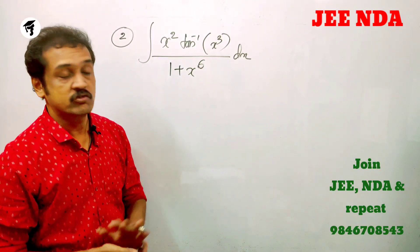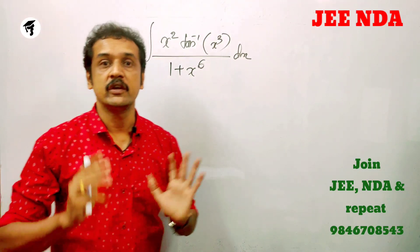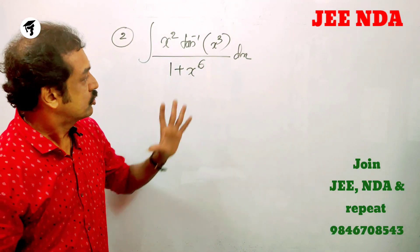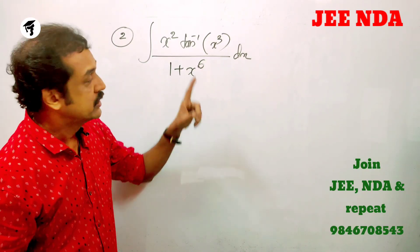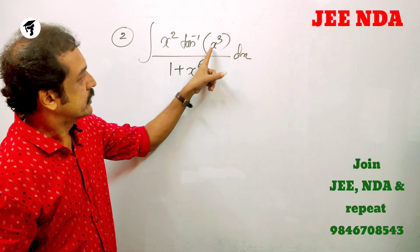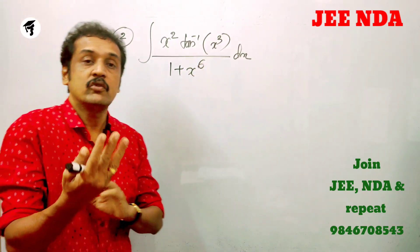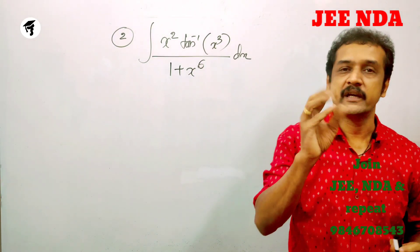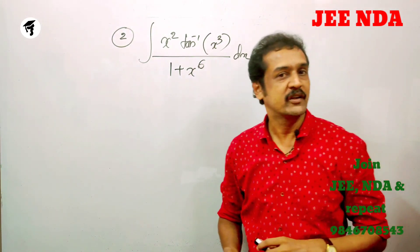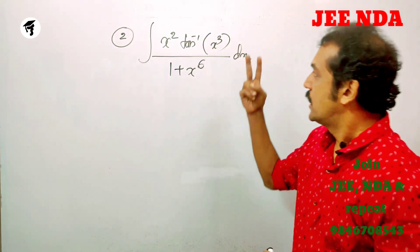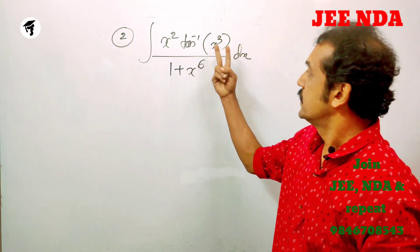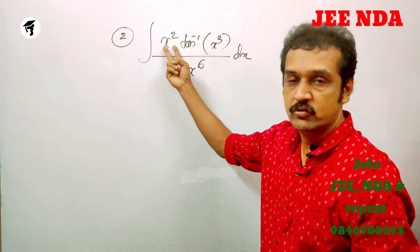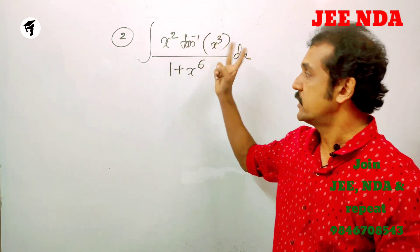The next question is: integral of x² · tan⁻¹(x³) divided by 1 plus x⁶. There is x³ involved, and the inverse of tan(x³) relates to the root structure of x³.